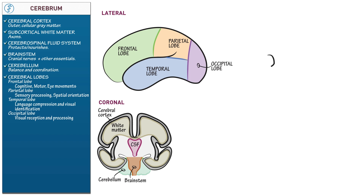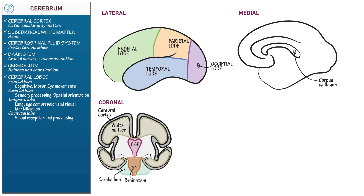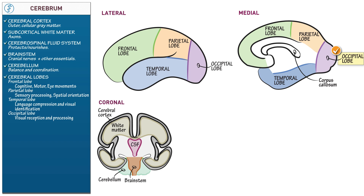Next draw the medial aspect of the cerebrum to inspect regions hidden in lateral view. As reference points, draw the corpus callosum, a major white matter connection pathway, and the cingulate sulcus above it. Shade the lobes: superior anterior is the frontal lobe, superior posterior is the parietal lobe, inferior is the temporal lobe, posterior is the occipital lobe. Central is the limbic lobe, best known for its role in memory, which localizes posteriorly, and emotional processing, which localizes anteriorly.